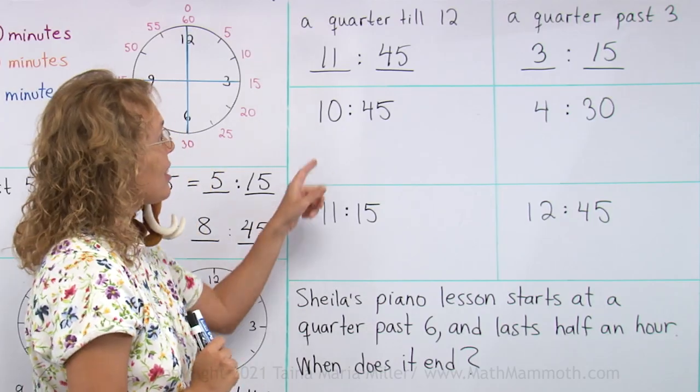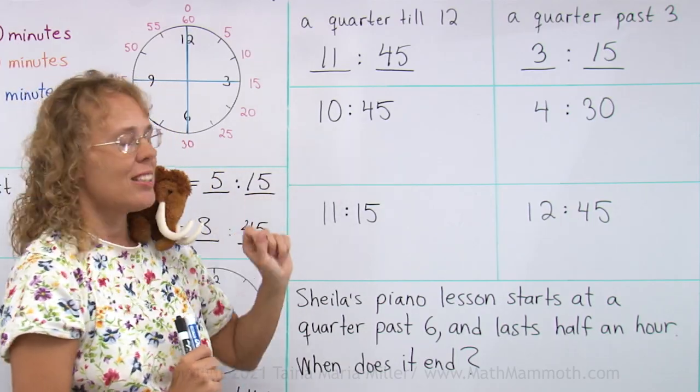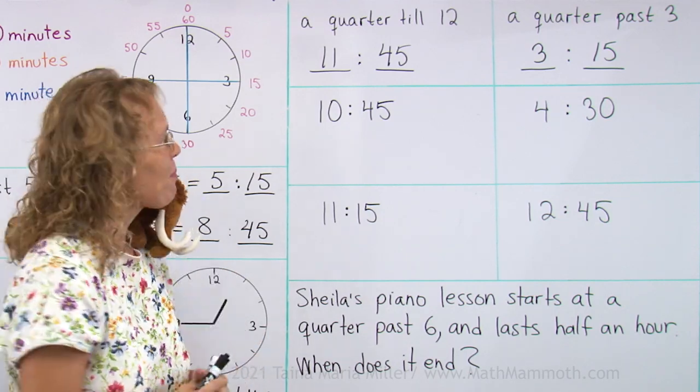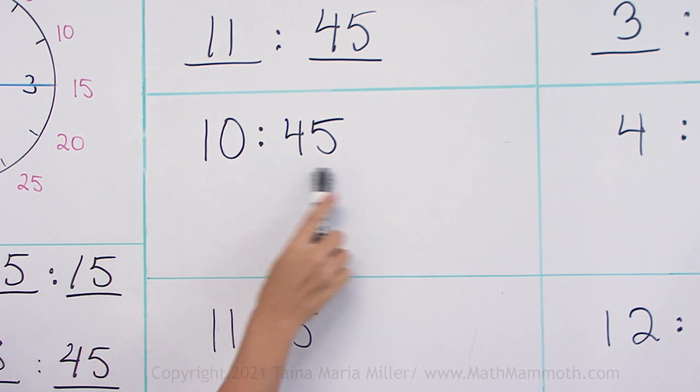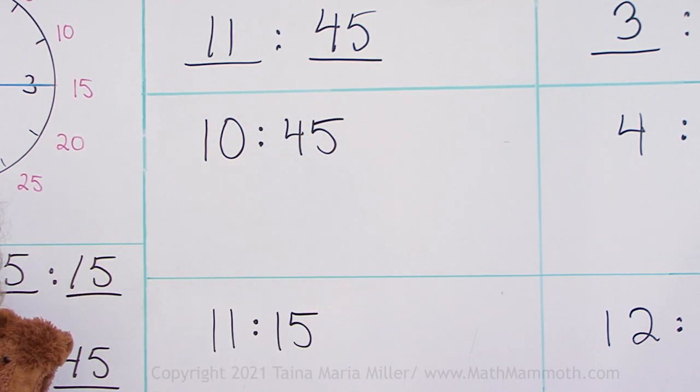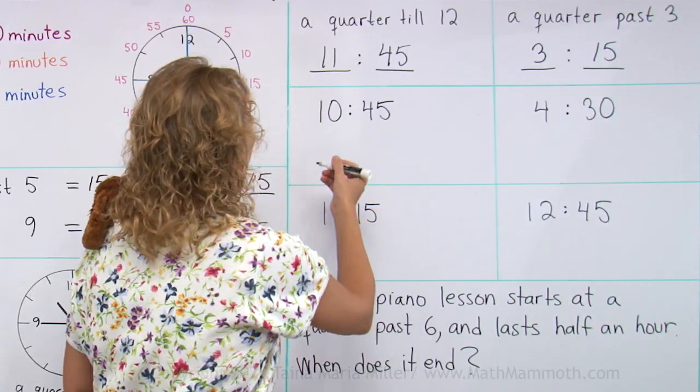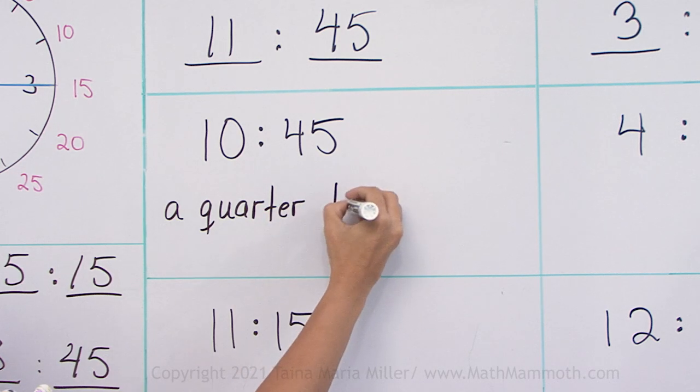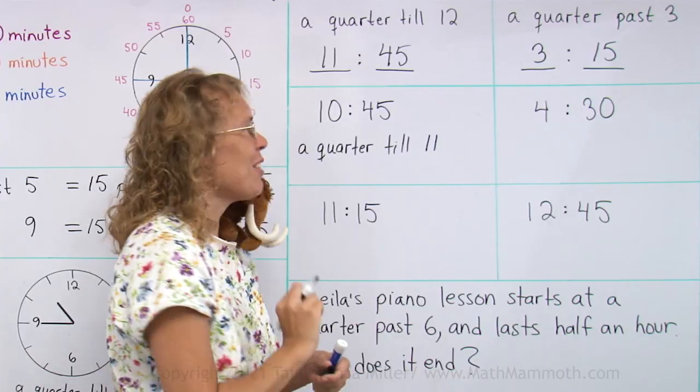Now the next ones are written in the hours and minutes way. So let's change them to the other way. Using past or till. This one here, 45 minutes. That means 15 minutes till. So let's use our new word quarter. A quarter till eleven, till the next hour.